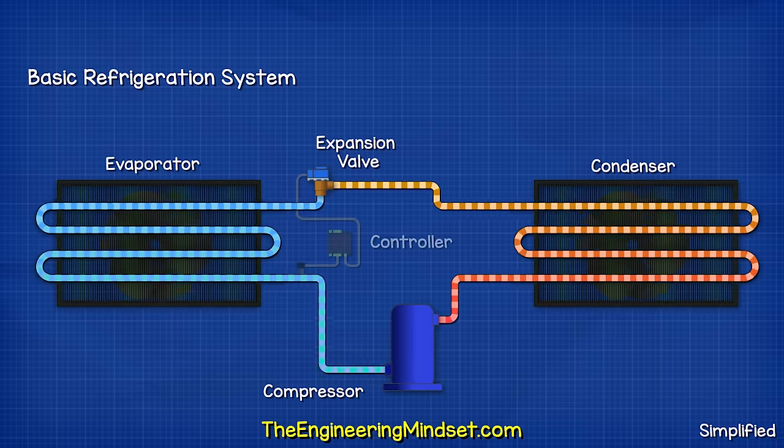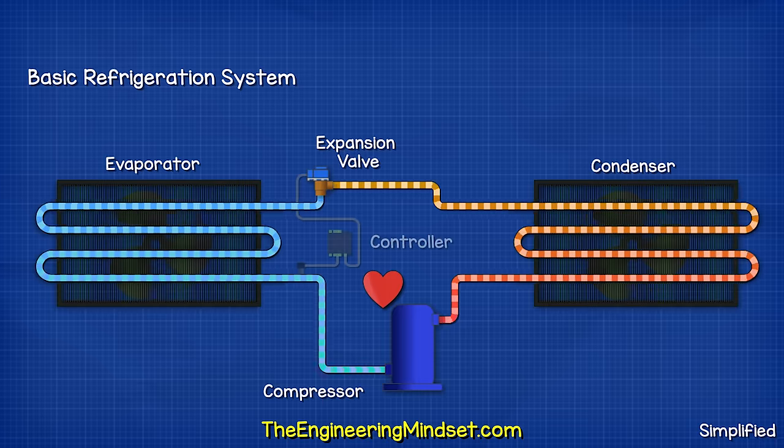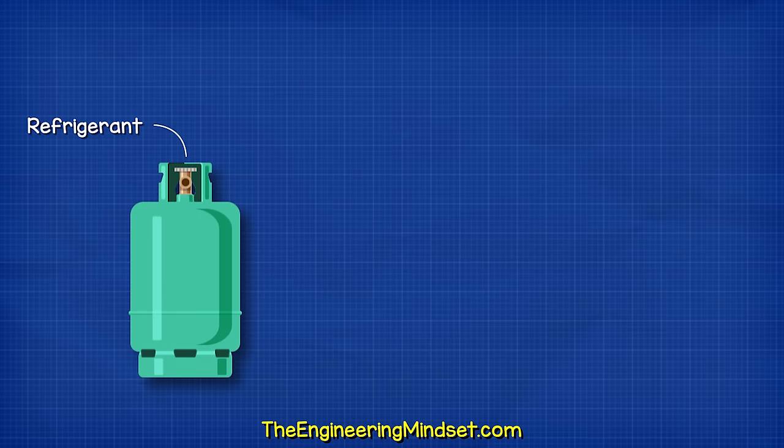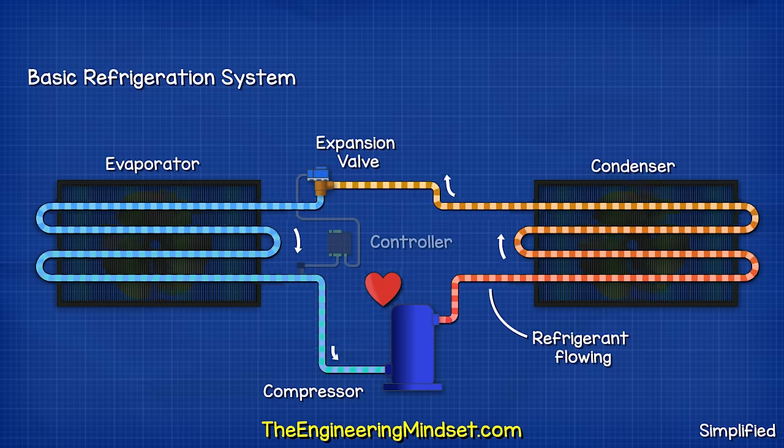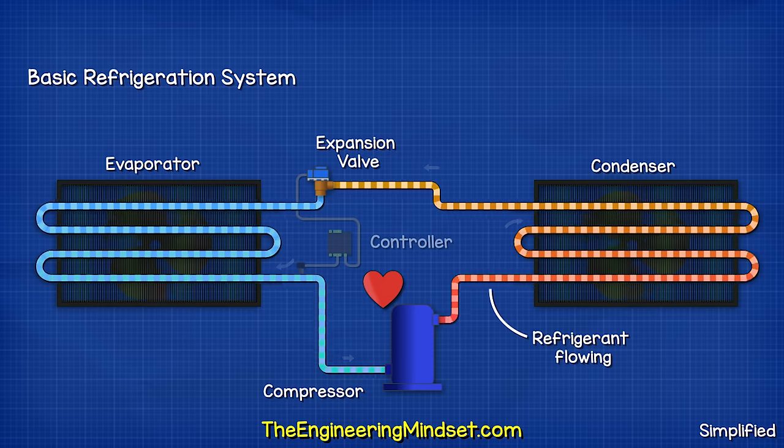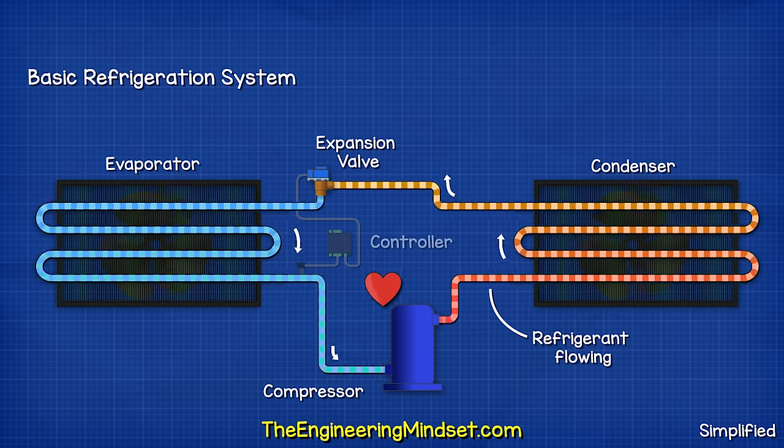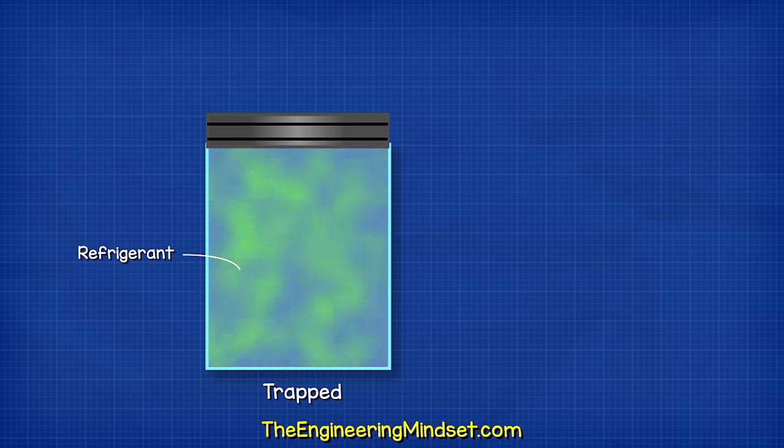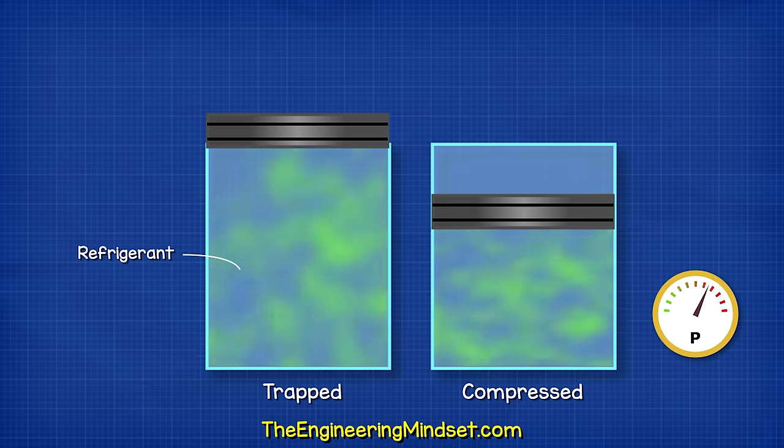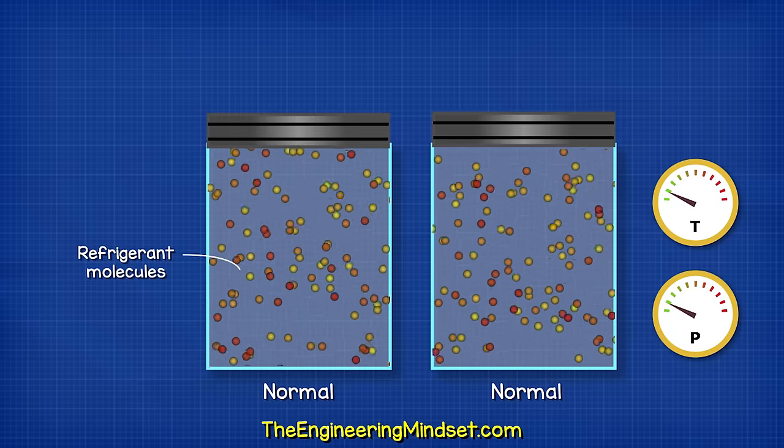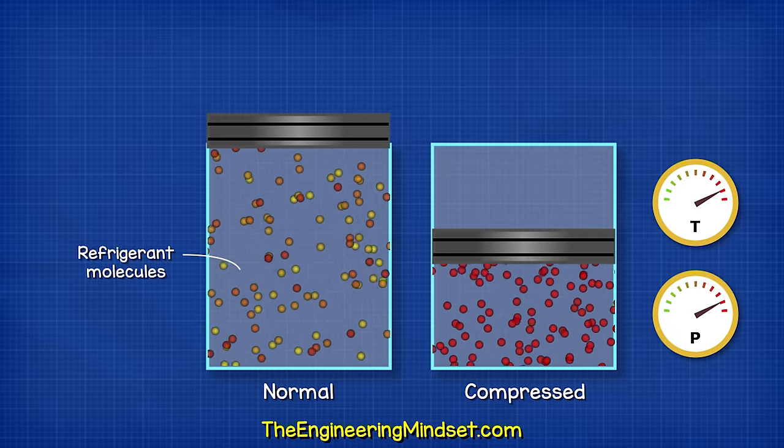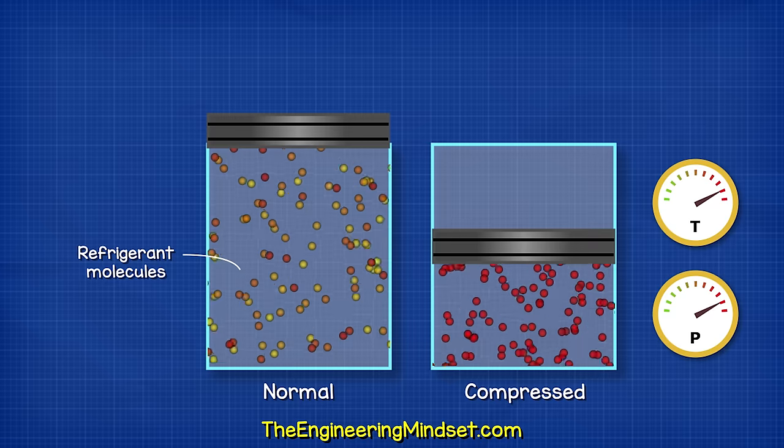Compressors are the heart of the refrigeration system. They push the refrigerant between all of the components. The refrigerant is a special fluid which can easily change between a liquid and a gas. The compressor pushes this around the entire refrigeration system, through the condenser, the expansion valve and evaporator, and then back to the compressor. Compressors simply trap a quantity of refrigerant and then compact this into a smaller volume to increase the pressure. The molecules are then tightly packed together and so they collide more often. The pressure and the temperature will therefore increase.